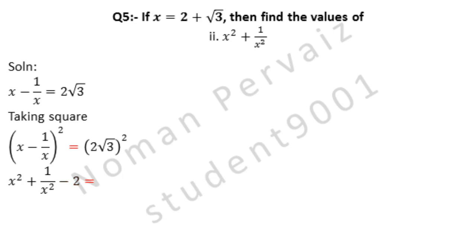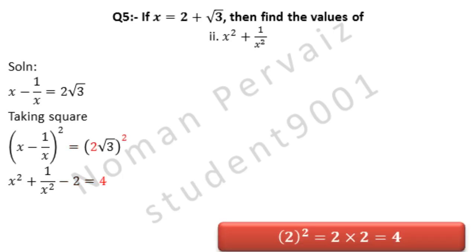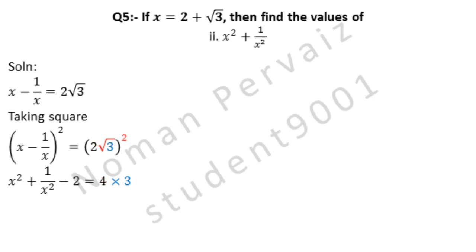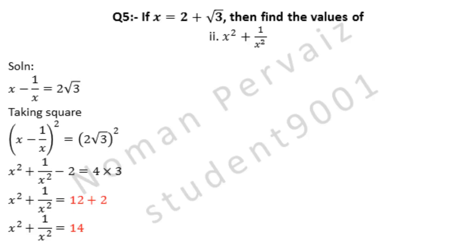Is equal to: 2 squared times 3 — 2 squared is 4, and square and square root cancel leaving 3, so 4 times 3 is 12. We move minus 2 to the other side, where it becomes plus 2. So x squared plus 1 over x squared equals 12 plus 2, which is 14. Hence, this is our answer.